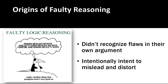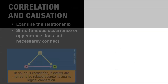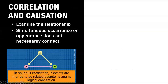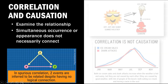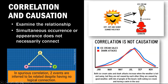It's flawed reasoning to assume that because two things are found together or occur at the same time, there must be a link between them — such as jumping to the conclusion that there's a cause and effect. Sunny weather may increase the likelihood of sunburns and also increase the consumption of ice cream, but there's no causal relationship between ice cream and sunburn. The same is true of ice cream and shark attacks.